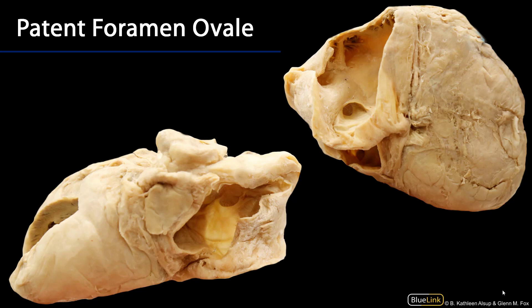At birth, these two septa snap together, and the foramen ovale is therefore obliterated. In a minority of cases, the foramen ovale remains patent or open, and blood can travel between the left and right atria. This is a short-circuiting of the pulmonary loop.